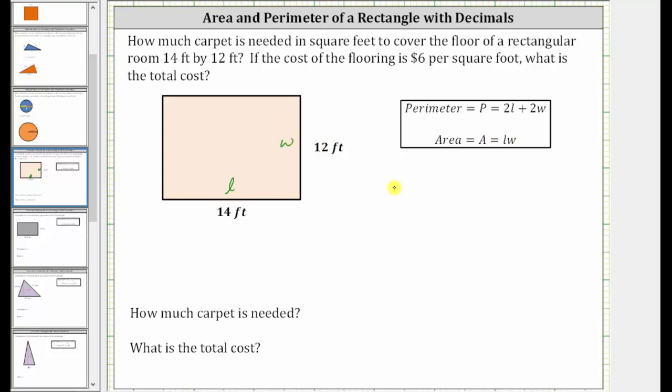Therefore the area is equal to 14 feet times 12 feet. 14 times 12 is equal to 168, and therefore the area is 168 square feet. So this is how much carpet is needed to carpet the room.